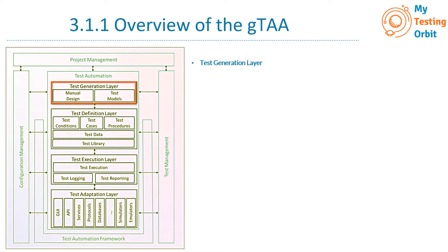The first layer is the test generation layer. In a generic test automation architecture, this layer supports manual or automated design of test suites or test cases. It is associated with tooling and methodology and helps us design effective tests. It supports both manual and automated design of test cases, and provides the means for designing them. Manual design and test models are both part of the test generation layer.